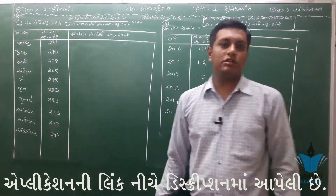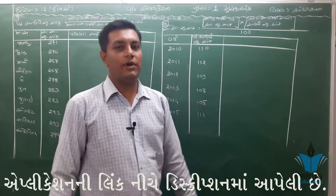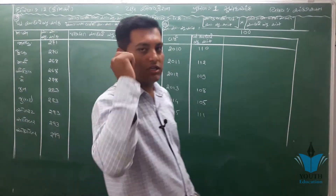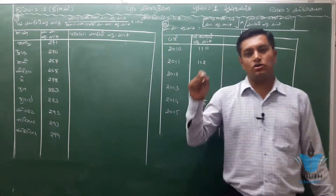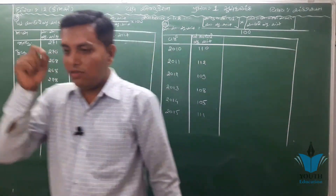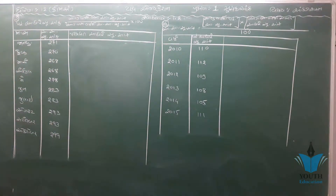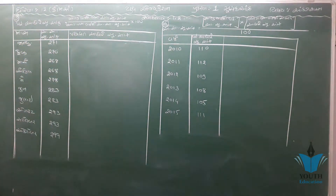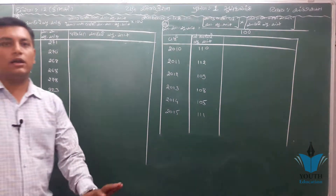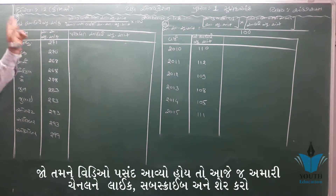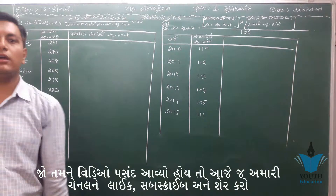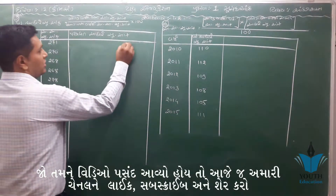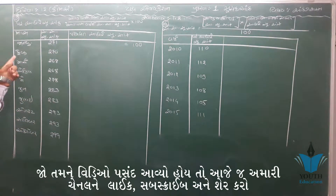આપણે પરંપરિતનો સૂચકાંક મેળવવાનો હોય તો આપણું સૂત્ર બને: ચાલુ વર્ષનો અચલ આધારનો સૂચકાંક ગુણ્યા સો. જ્યારે આધાર વર્ષનો ઉલ્લેખ કરેલો ન હોય ત્યારે આપણે ભાગ સો લેવો. પ્રથમ વર્ષનો પરંપરિત સૂચકાંક સો બનશે.